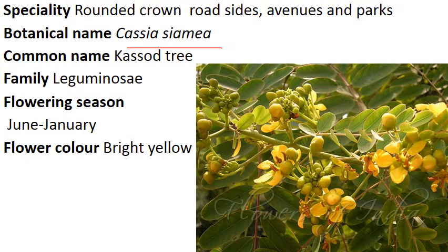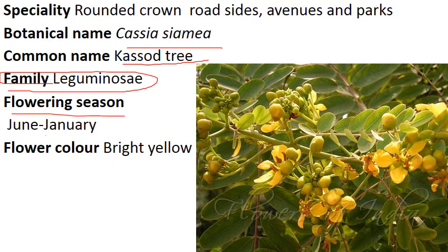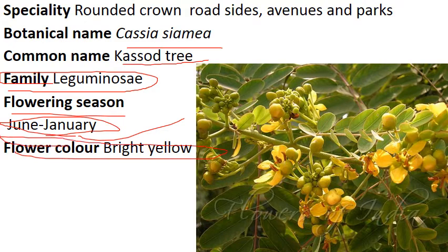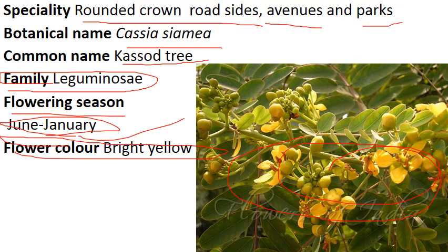Next one: Cassia siamea. Common name is Cassia tree. An important feature is that this tree can grow on any type of land — marshy land, clay soil, sandy soil, wasteland — the growing efficiency will differ but it can grow. Family is Leguminosae, Pea family. Flowering season is January to June, summer season. Flower color is bright yellow. Special feature: it has a rounded crown and can be grown roadside, in avenues, and in parks.